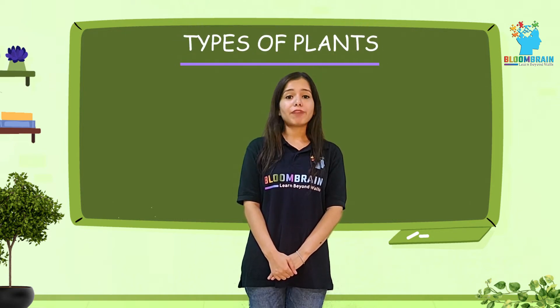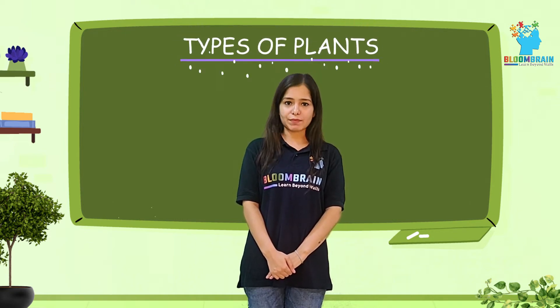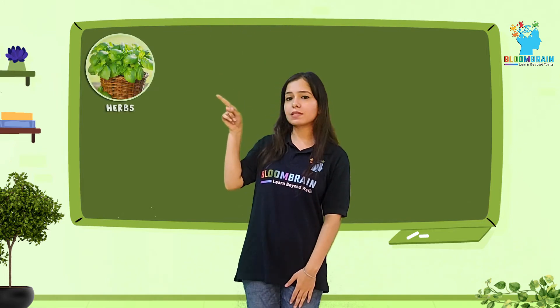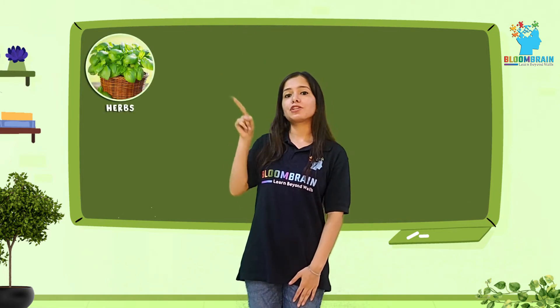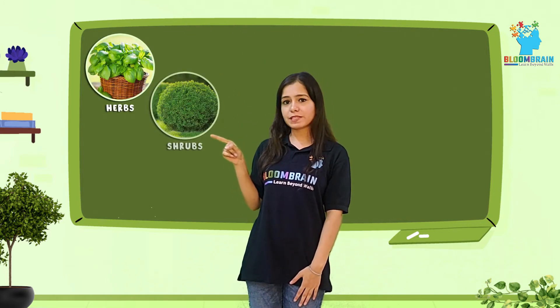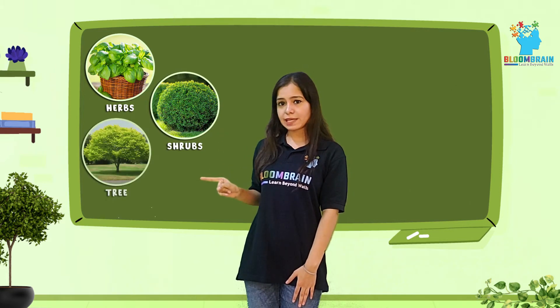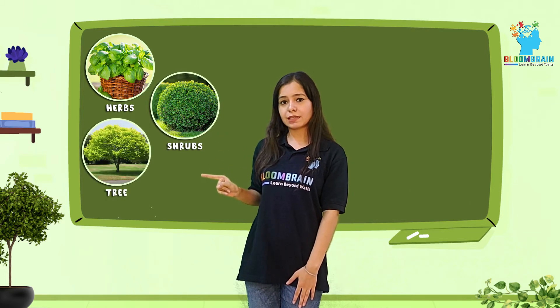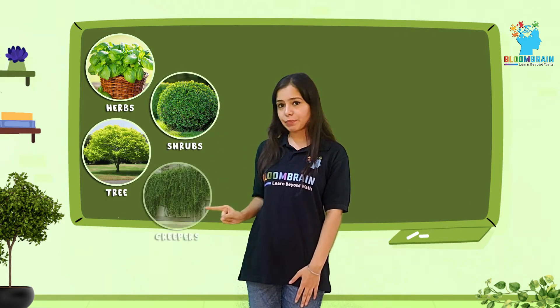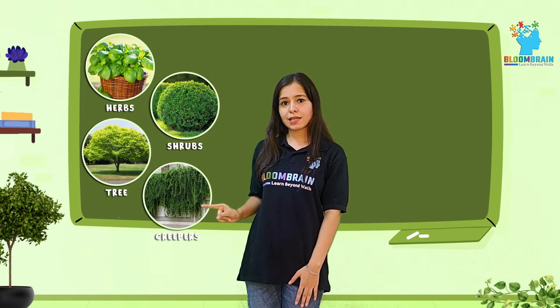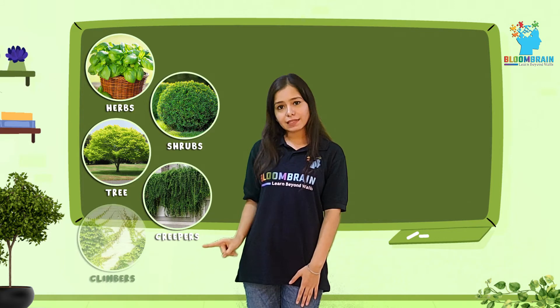There are five major types of plants: herbs, shrubs, trees, creepers, and climbers.